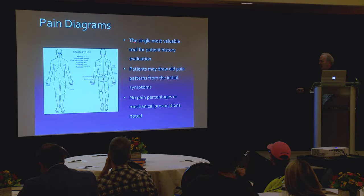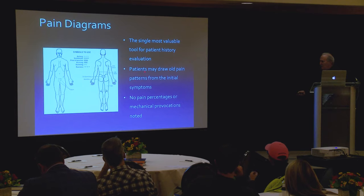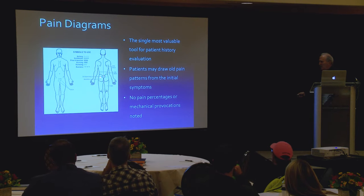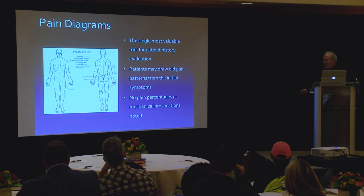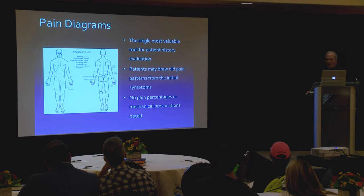Pain diagrams are the single most valuable tool for patient history evaluation, period. They tell you more than you want to know. However, they may draw old pain patterns from initial symptoms — for example, three months ago the pain radiated all the way down to their left foot, but now it sits in the buttocks, and they draw the left foot in anyway. So it's not perfect; you have to understand temporally how they're doing. There are no pain percentages or mechanical provocations on the diagram — but if you look at this and listen to their history, 95% of the time you'll get the right diagnosis without even doing an exam.